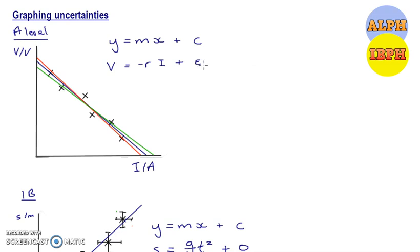So the question is, after we've found the gradient, which is a great way to reduce random uncertainties in a result, how do we find the uncertainty in our gradient? So for A-level, the first thing you do after you've drawn your line of best fit is draw your worst line of best fit.